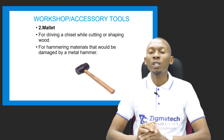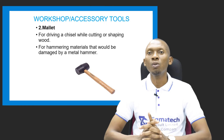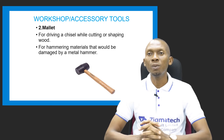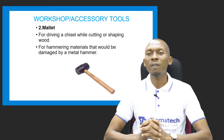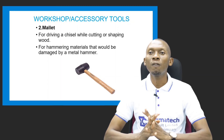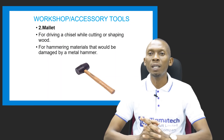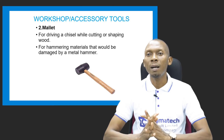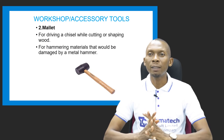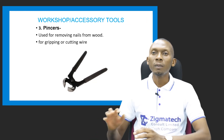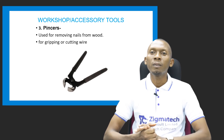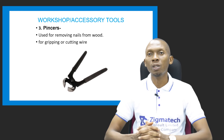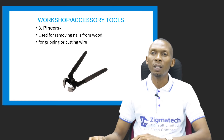We have the mallet, which is another workshop tool used for driving a chisel while cutting or shaping wood, and also for hammering materials that would be damaged if a metal hammer were used. The pincer is used for removing nails from wood and also for gripping or cutting wire. The plier is also used for gripping and twisting wires, holding bolts and nuts, and for cutting wires and cables.